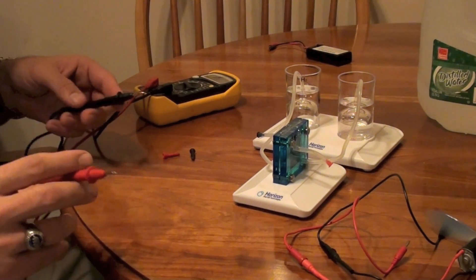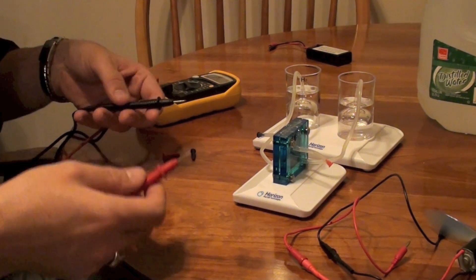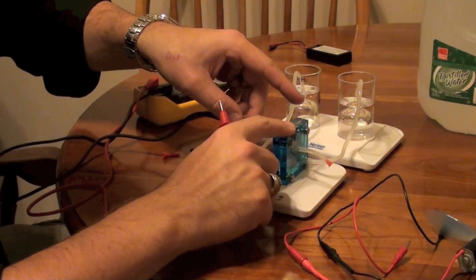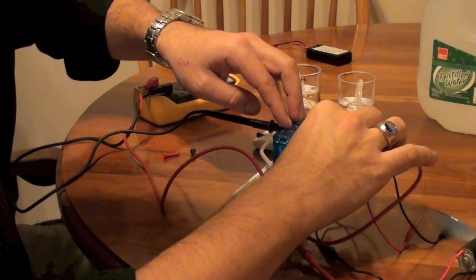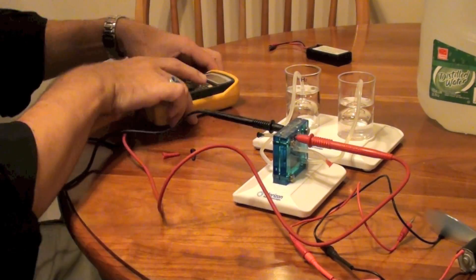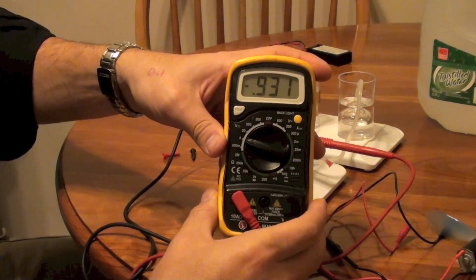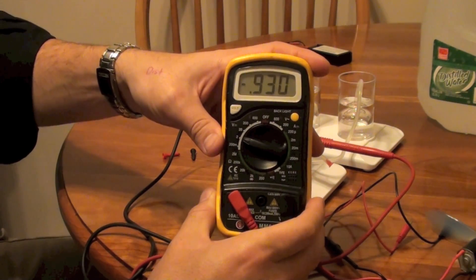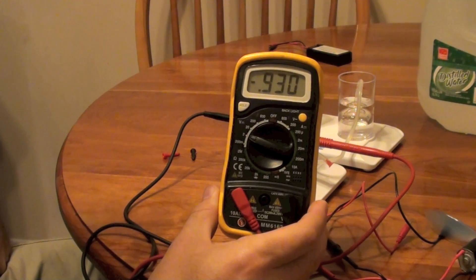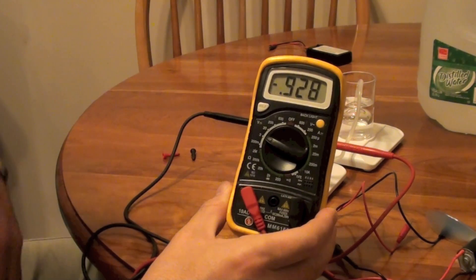Okay now we've decided to introduce a voltmeter to this to actually measure how much volts this is producing. There we go. All right we're going to check the meter and it's showing us 0.93 pretty consistent volts of electricity being produced here. So there you go. It really is producing electricity and that is hydrogen fuel cells.